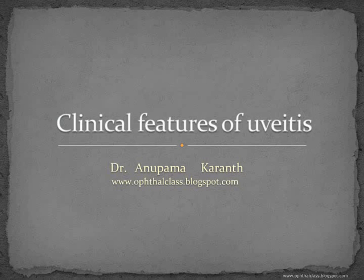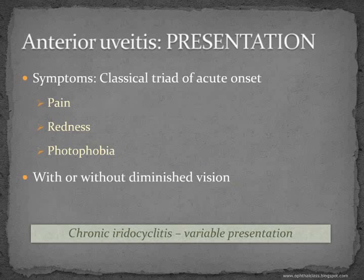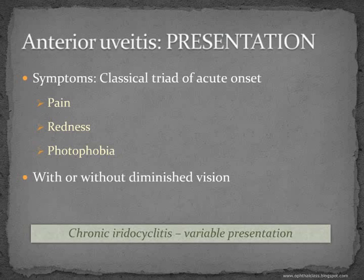Continuing our talk on overview of uveitis, let us now deal with the clinical features of uveitis. The presentation here includes the classical triad of acute onset of pain, redness and photophobia. This may be accompanied by diminished vision or may not be. Pain is caused by ciliary spasm, redness by conjunctival congestion, and photophobia is abnormal sensitivity to light.